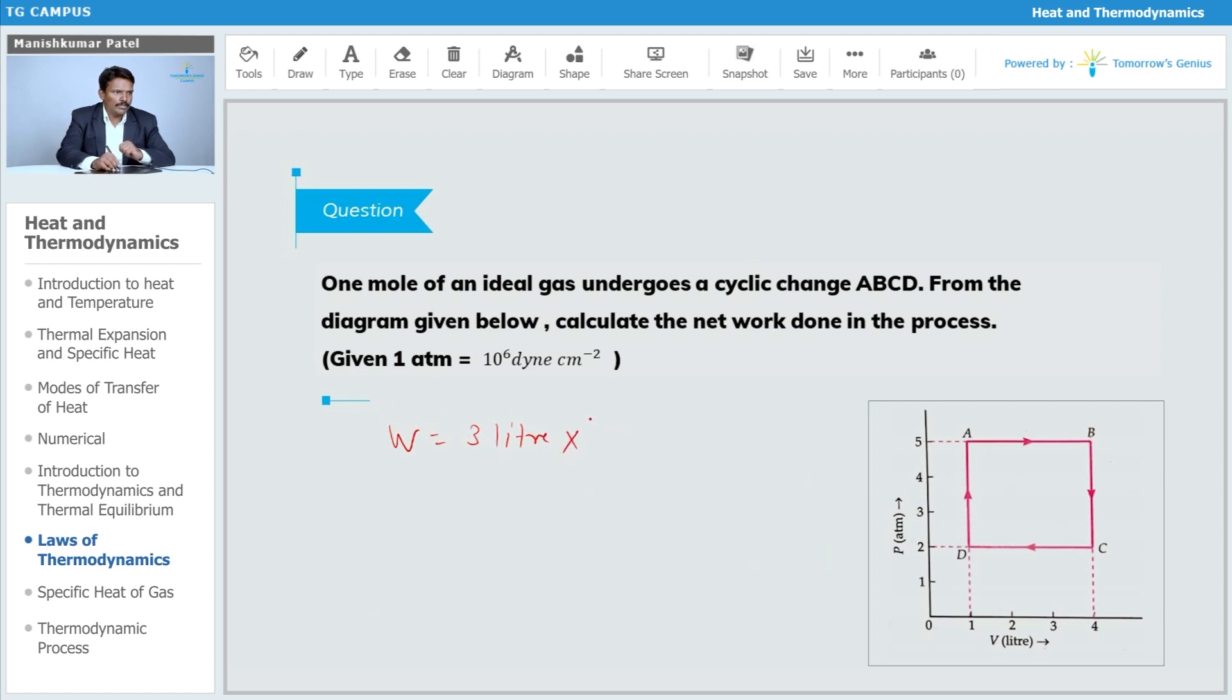and multiply by this, which is 5 minus 2, so this is 3 atmospheres. Now, 3 liters is 3 × 10³ cm³, and 3 atmospheres is 3 × 10⁶. So this is simply 9 × 10⁹.